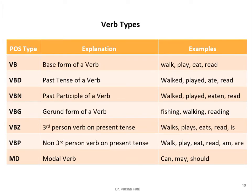For verb types: VB is the base form of the verb (e.g., walk, play, eat, read); VBD is past tense (e.g., walked, played, ate, read); VBN is past participle (e.g., walked, played, eaten, read); and VBG is the -ing form — when we add 'ing', it can act as a gerund, functioning as both verb and noun (e.g., fishing, walking, reading).